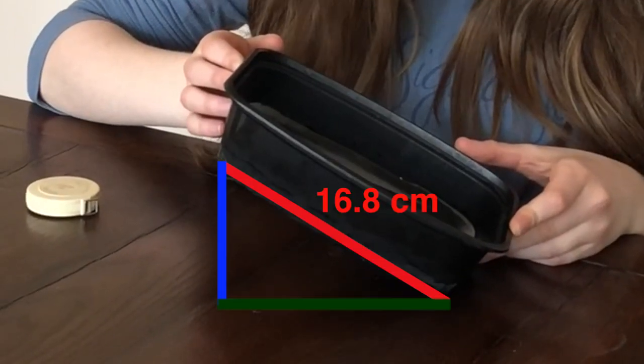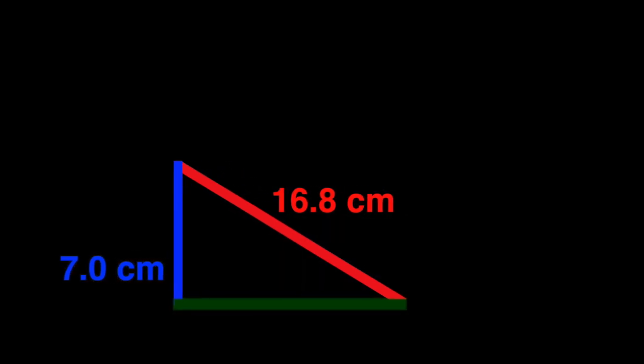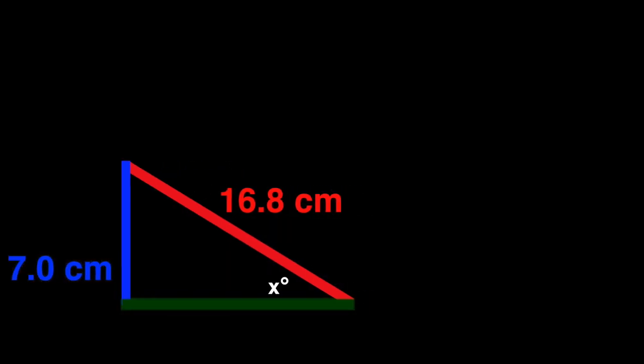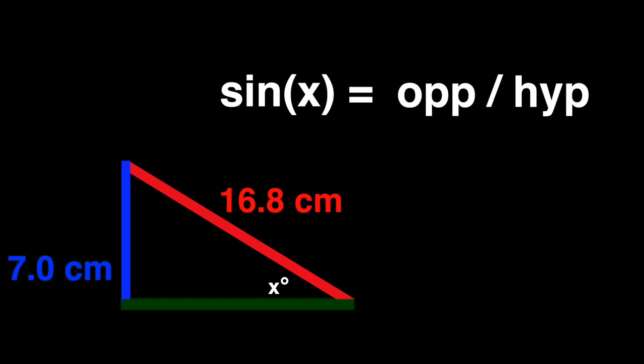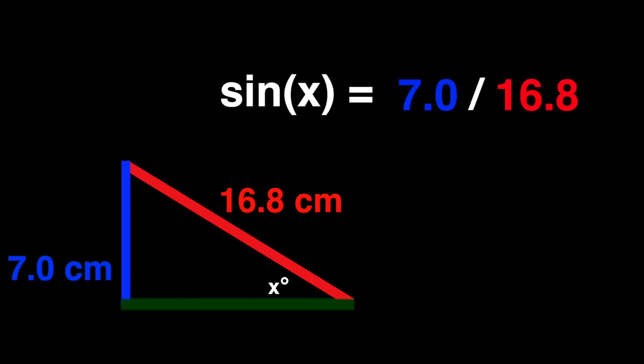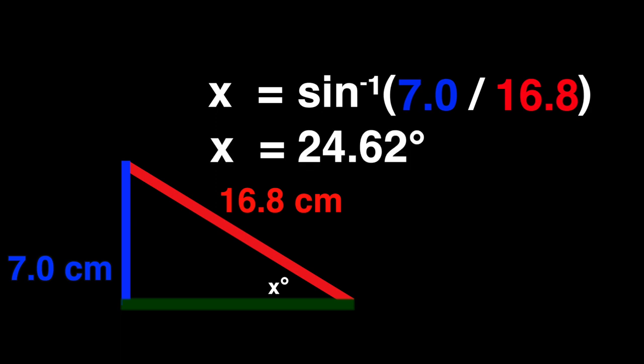Here is the triangle formed by the tilted ice at the moment before the rubber began to slide. Now we must solve for the angle of elevation marked x. We know that sin x equals opposite over hypotenuse. In this case, sin x equals 7 divided by 16.8. We can solve for x by taking the sin inverse of 7 divided by 16.8. Thus, x equals 24.62 degrees.